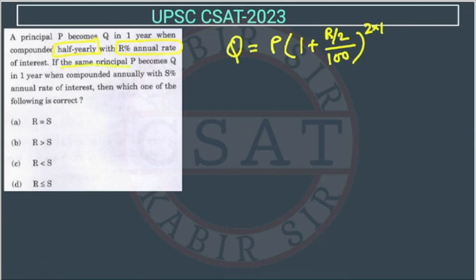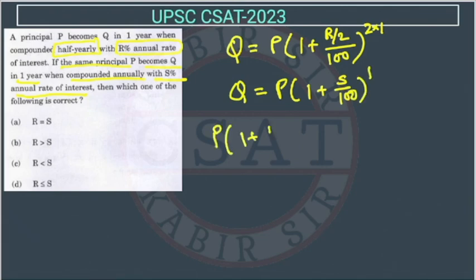Now, if the same principal P becomes Q in one year when compounded annually. So now it is compounded annually with S percent of annual rate of interest. So again it is becoming Q, but now principal is same, but now the interest is S and the time is 1 year. So this is same.